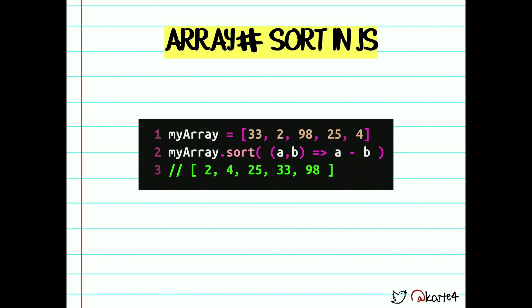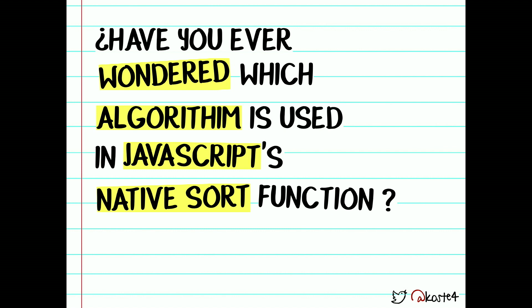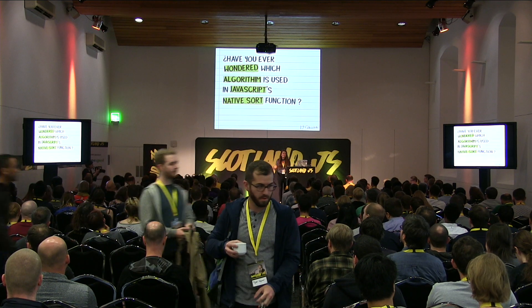So what have we been doing as developers to try sorting something in a numerical way? We provide the compare function. And here is the million dollar question: have you ever wondered which is the actual algorithm used behind the native sort function in JavaScript? The answer is that the ECMAScript standard doesn't really impose a certain algorithm to be used in the sorting function. This means that every JavaScript engine can do whatever implementation they feel like doing. All of these engines are open source and we can see the source code — and that's actually what I did.